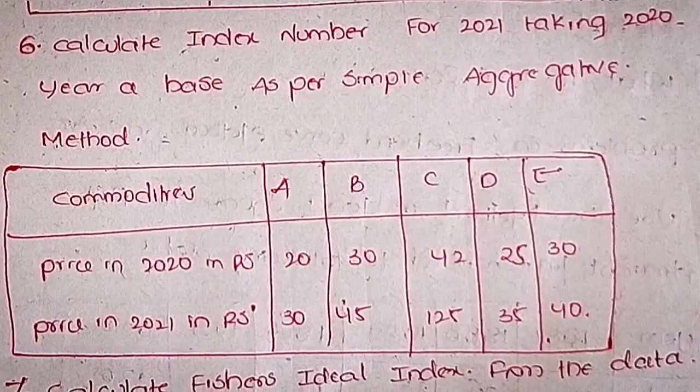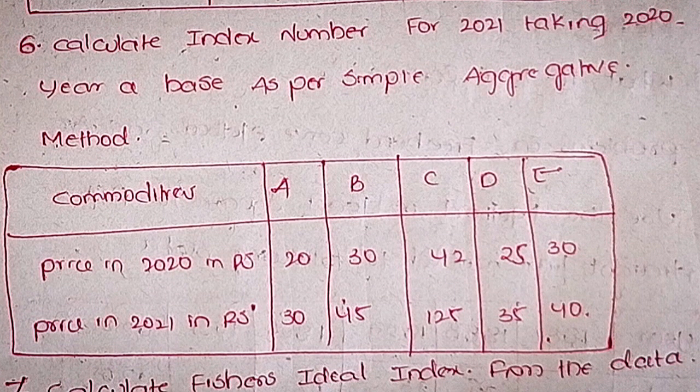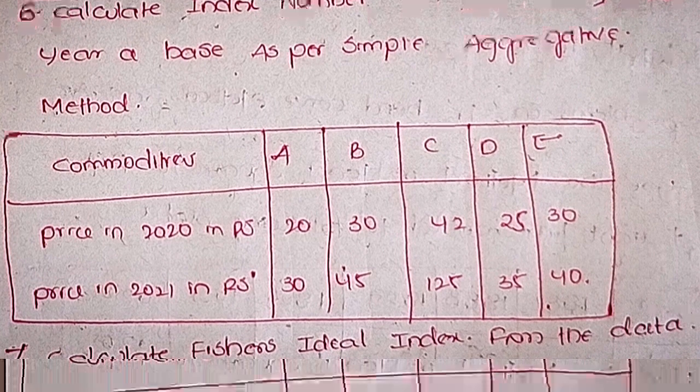Sixthly, calculate index numbers for 2021 taking 2020 as the base year, using the simple aggregative method. Commodities A, B, C, D, E. Prices in 2020 (rupees): 20, 30, 42, 25, 30. Prices in 2021 (rupees): 30, 45, 125, 35, 40.